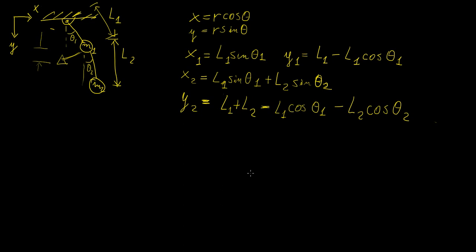Now we're going to transform this problem into the domain of polar coordinates. Be very careful in the way you define your angle, because the horizontal component is going to be equal to the sine of that angle. So x1 is going to be L1 sine of theta. And x2 is going to be this displacement plus this displacement, because this is the position of the second pendulum with respect to the first one — but this is a two-body system, so we need to take into account that it is also moving with respect to the original pivot point.